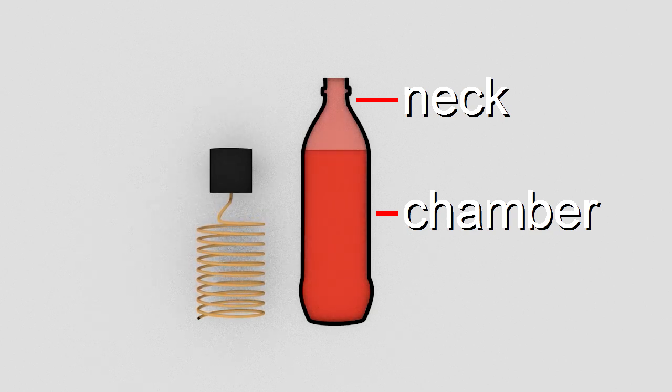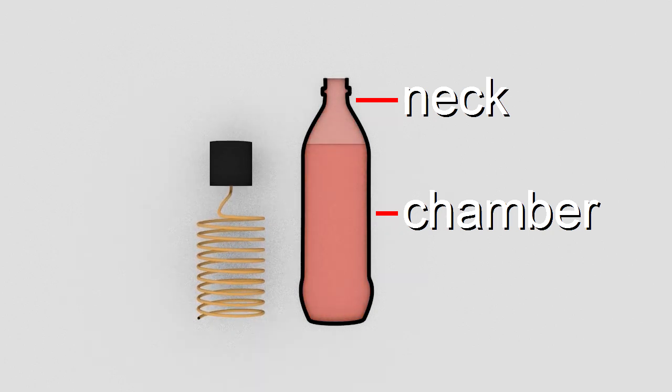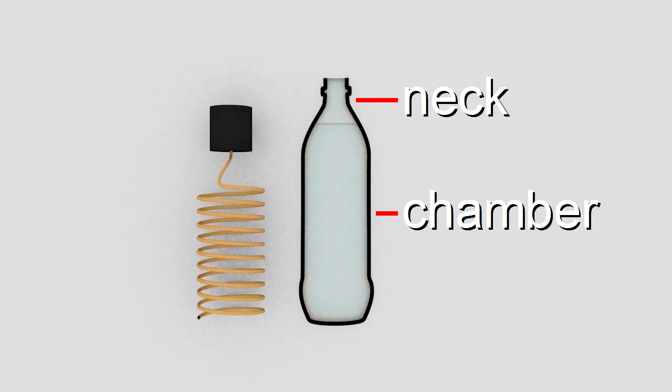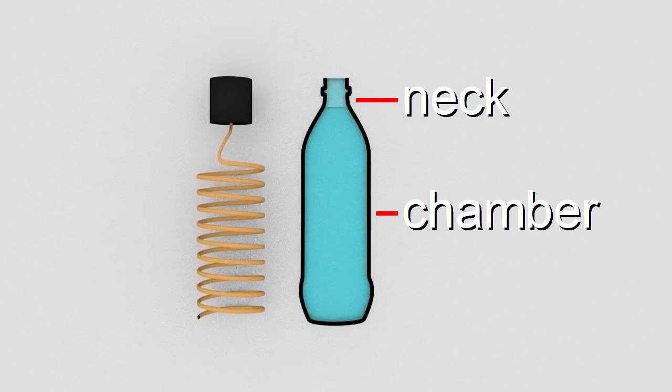At some point we run out of energy and the compression stops. The energy has all gone into compressing the air. At that point the process reverses and the air starts to decompress, forcing the air in the neck back out. This pressure decrease continues and even goes too far as the pressure inside the bottle becomes slightly less than the room air pressure.